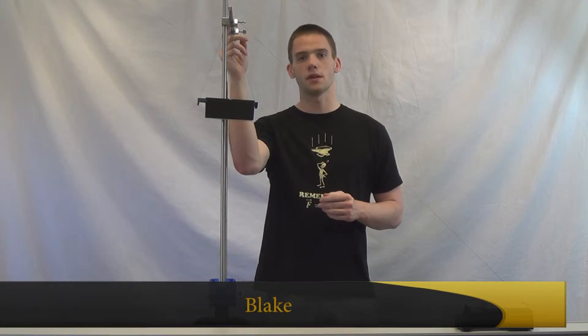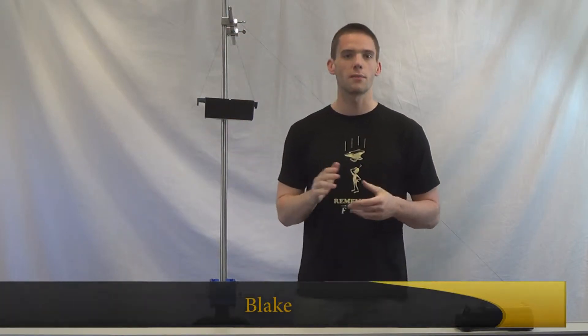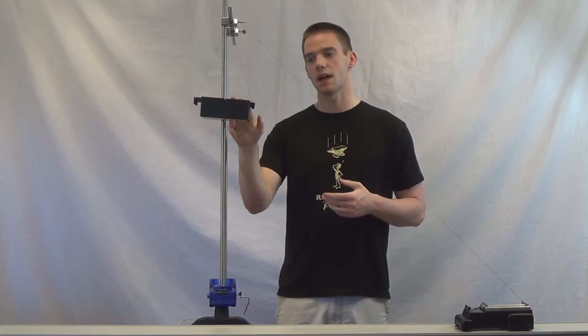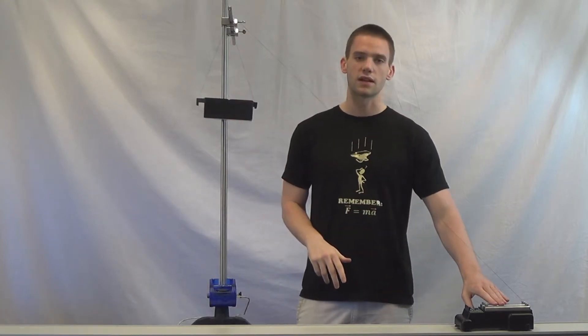Today we're going to be looking at the kinematics of a cable pulley system. We're going to approximate a frictionless pulley with a steel rod, and we're going to have a couple setups that we can show you the relationships between the velocity of this block and this constant velocity car.